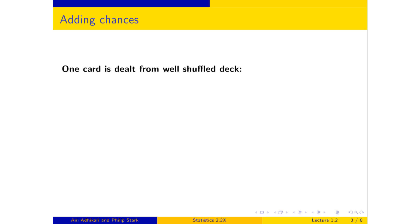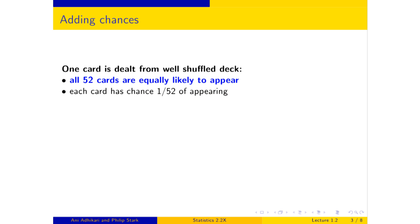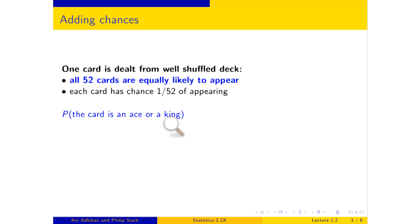Here's some language you're going to be seeing over and over: 'One card is dealt from a well-shuffled deck.' The assumption is that all 52 cards are equally likely to appear — that's what 'well-shuffled' means. Each card has chance 1 in 52. Now suppose I ask: what is the chance that the card is an ace or a king? How many cards satisfy this condition? Four aces plus four kings — that's 8 cards total. Nothing else satisfies this condition. We have 52 cards in all, all equally likely, so the chance is 8 out of 52. It's just the proportion of cards that satisfy the condition.